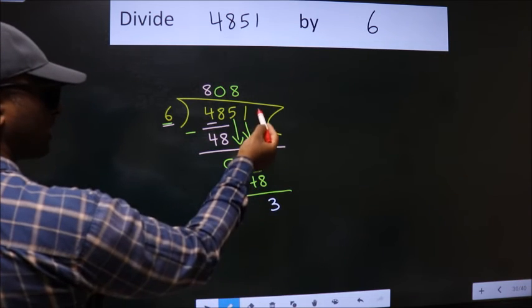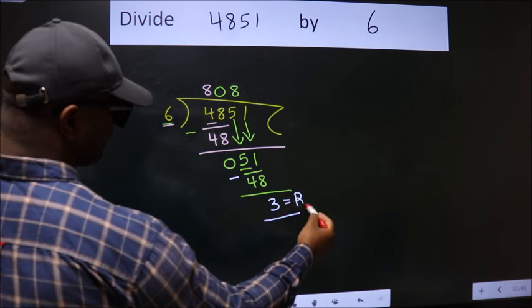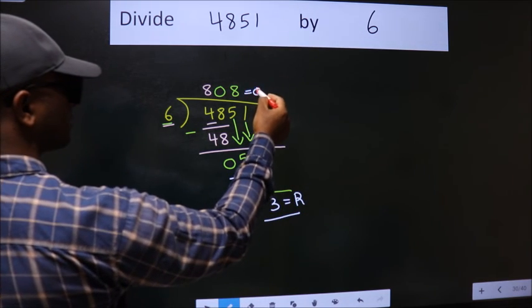No more numbers to bring it down, so we stop here. This is our remainder. This is our quotient.